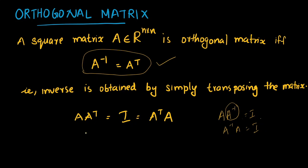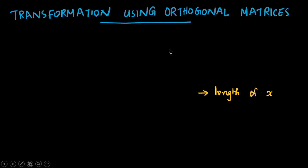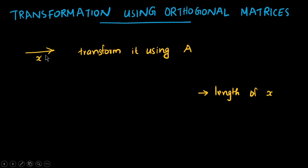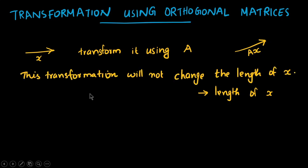Regarding the transformation using orthogonal matrices: suppose we have a vector x and transform it using A to get the vector Ax. The transformation will not change the length of x — that is an important fact. The length of a vector will not change when we transform it using an orthogonal matrix.